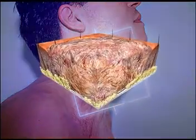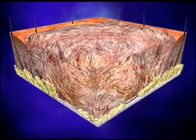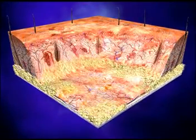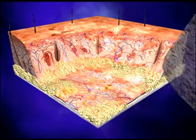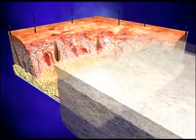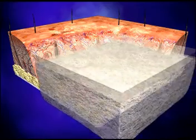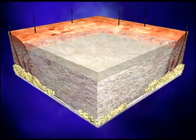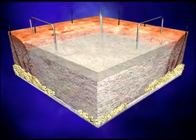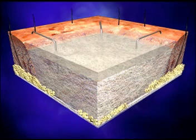Integra Dermal Regeneration Template is applied to an excised wound bed in which all non-viable tissue has been removed. It is typically secured in place by staples and an elastic net dressing. Once in place, the process of dermal regeneration begins.